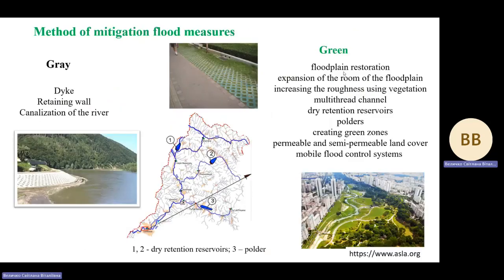Traditional flood protection measures are grey measures such as dikes, retaining walls, and canalization of the river. Sustainable development goals require other approaches to protect against extreme floods — these are the so-called green measures.